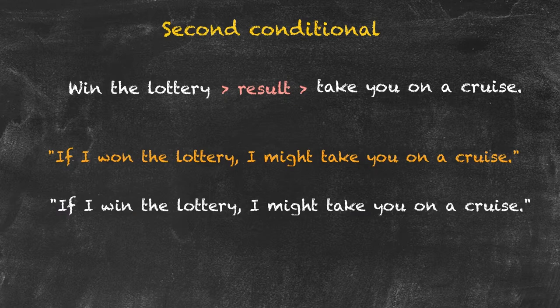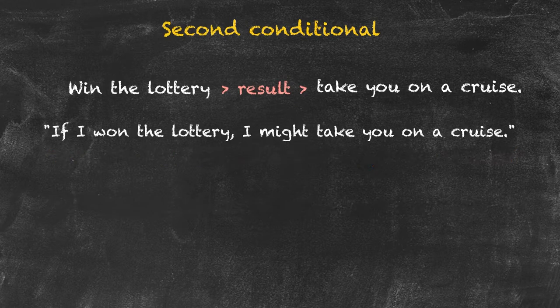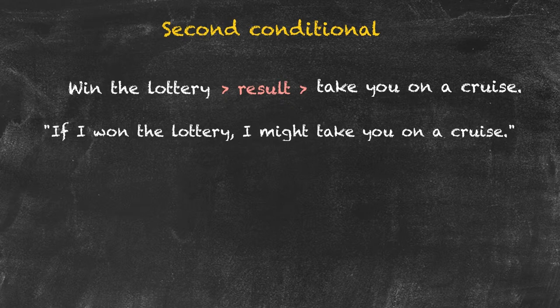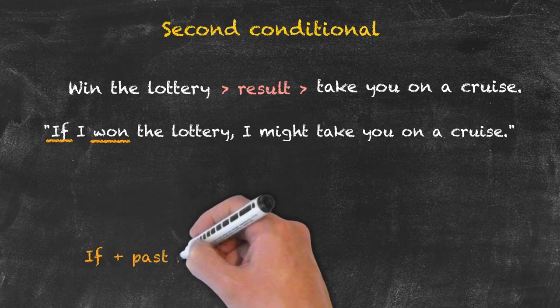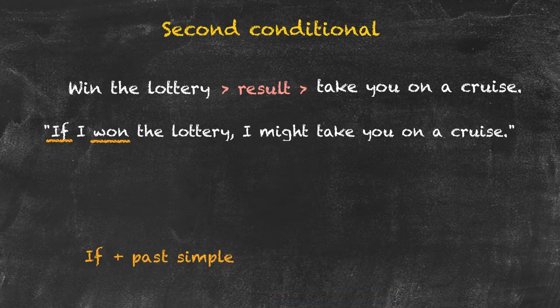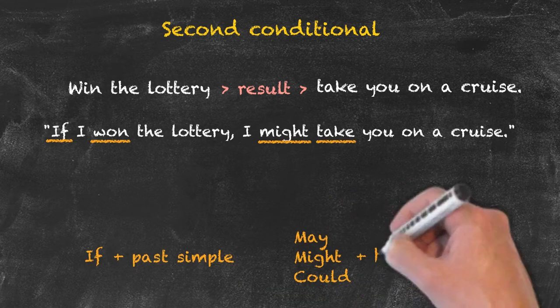Let's have a look at the structure of the second conditional. Here we have if plus the past simple, might (which we should substitute with other modals), and the base form. Again, similar to the first conditional, but a couple of changes that can be made to the structure.